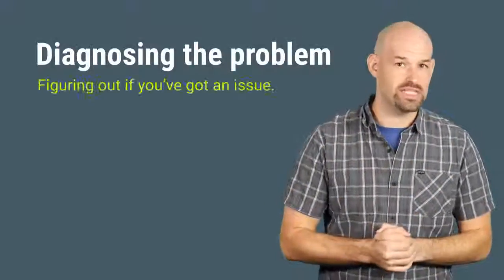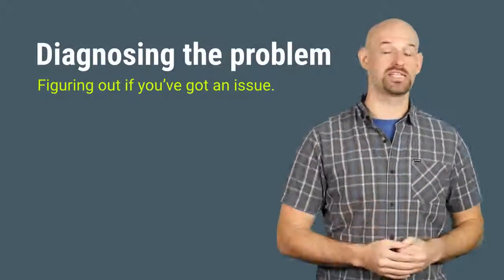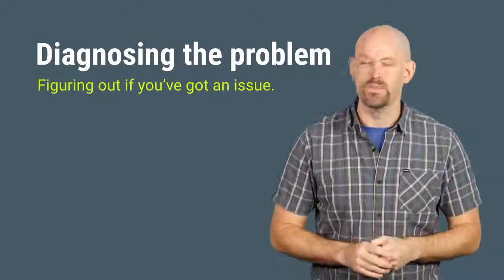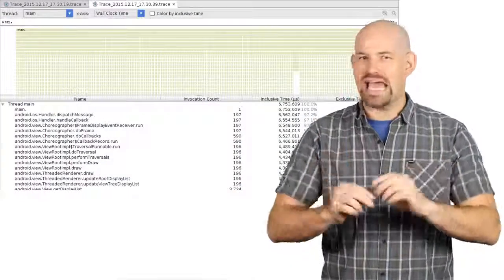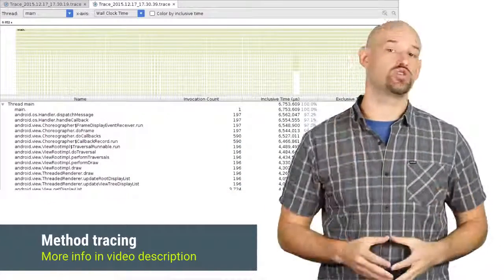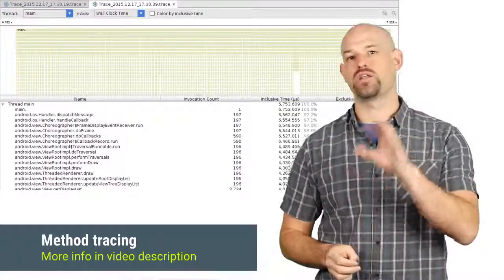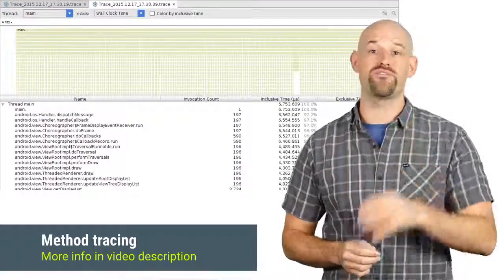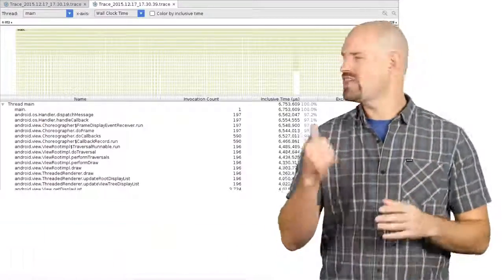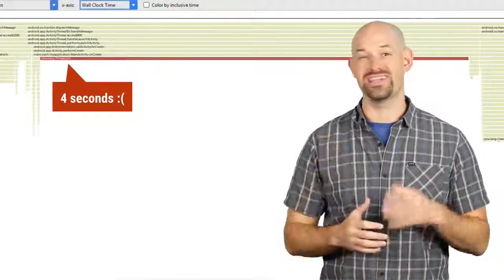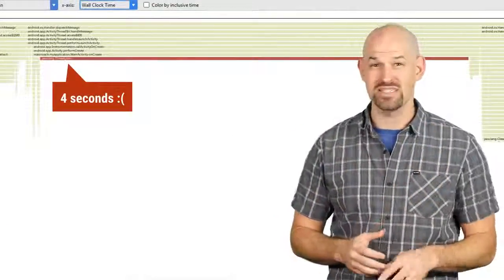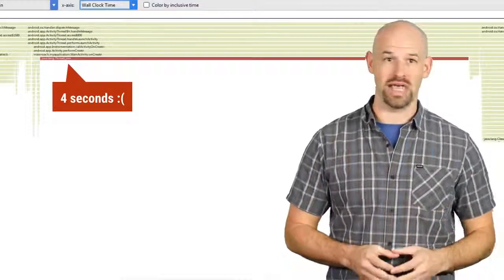So if you'd like to streamline your activity loading to give users the best experience possible, here's what you need to do. First, figure out if you actually have a problem, which you can do with the method tracing tool. This will give you a snapshot of your call stack and let you visually see what functions are taking longer than others. If the onCreate function of your activity is taking longer than 16 to 30 milliseconds, then it's worth exploring more to see what might be causing the delay.